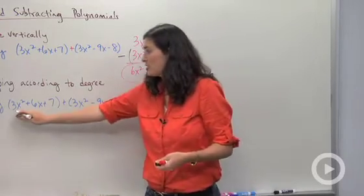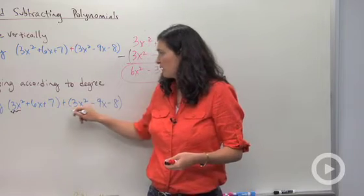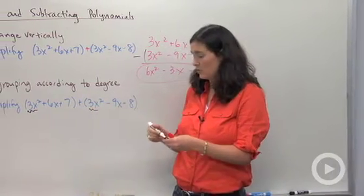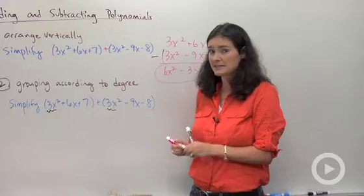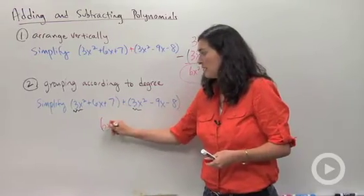When you're grouping these terms according to degree, remember degree means the exponent. So if I look, I'm going to be looking for all my x squareds. I have 3x squared and then 3 more x squared, so all together that is 6x squared. That's going to be the first part of my answer.